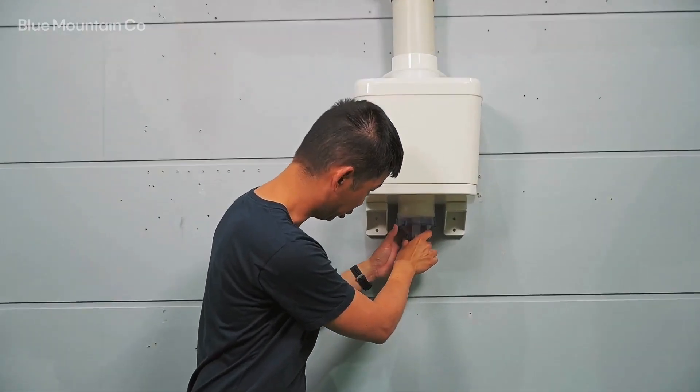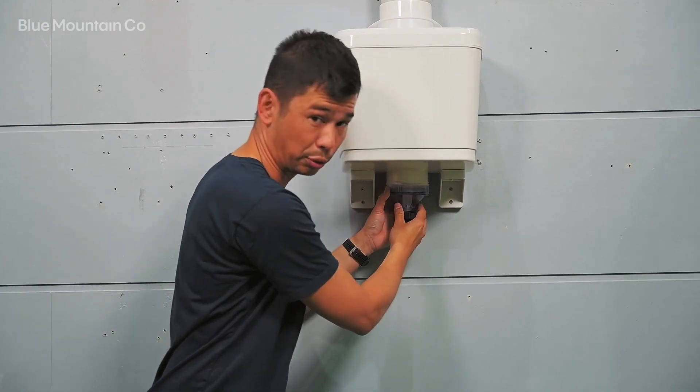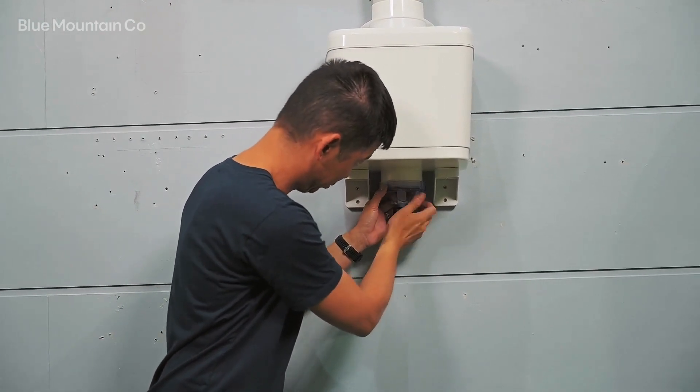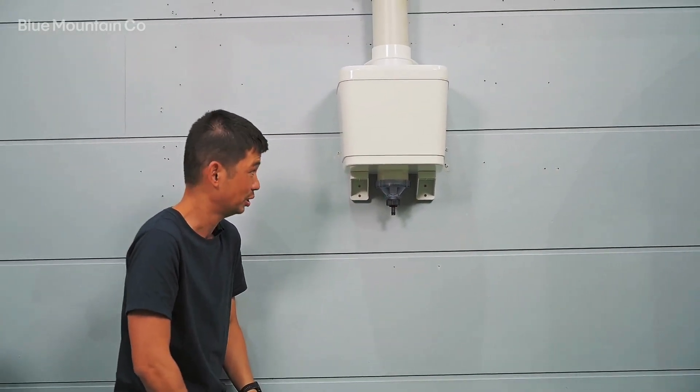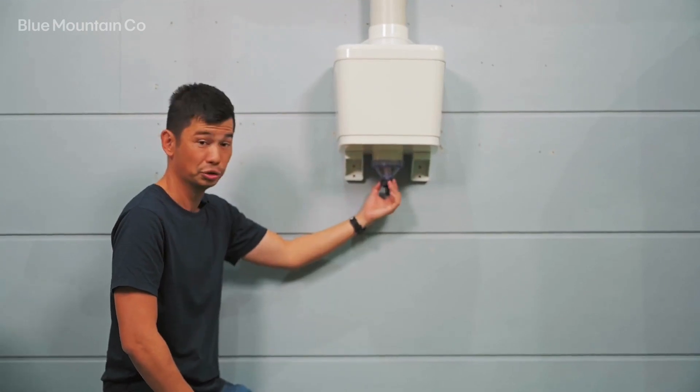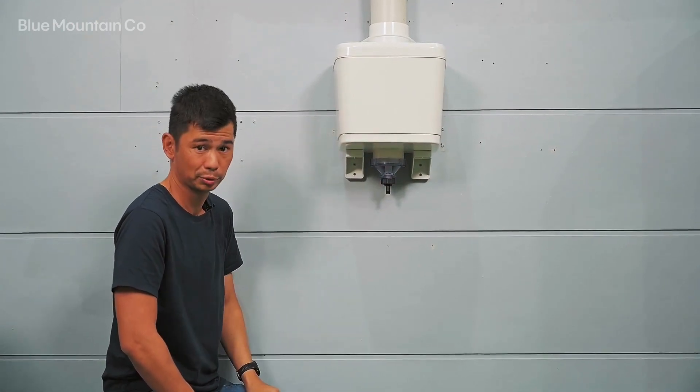And then we're just going to push this in and then screw it into place. There we go. Screw it up nice and firm. Make sure that it's nicely sealed. And that's how you install the end fitting when you're using a slow release valve onto a first flush boost.